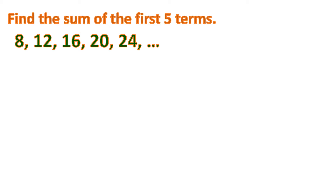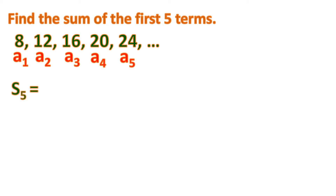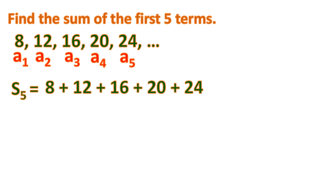And to find the sum of the first five terms, we are going to add the first term, the second term, third term, fourth term, up to the fifth term. So let us solve S5, or the sum of the five terms. We add all the five terms and the sum is 80. So that's how simple it is.